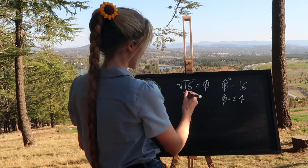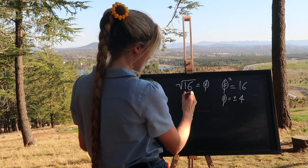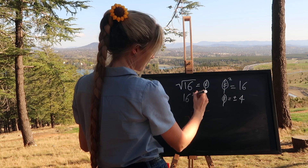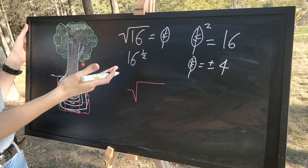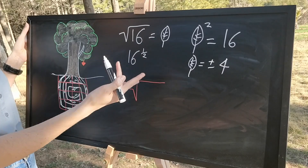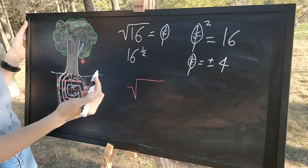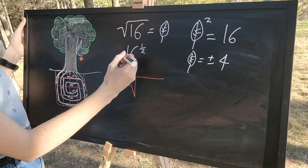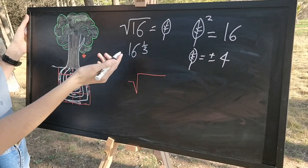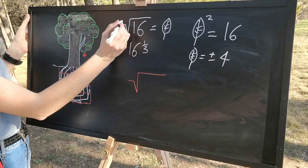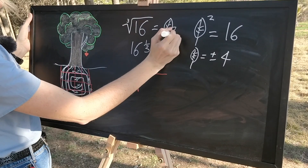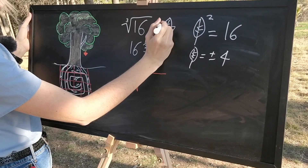The square root can also just as easily be written as 16 to the half. We can start using fractional powers, and for other roots — say the cube root — we would just extend this to be 16 to the one third, or we could write 3 in our little square root symbol, and that would give us a different solution.